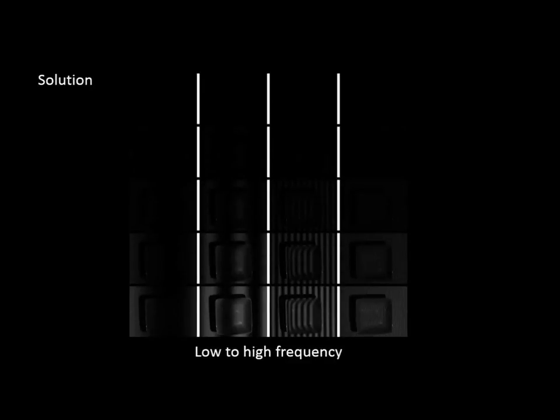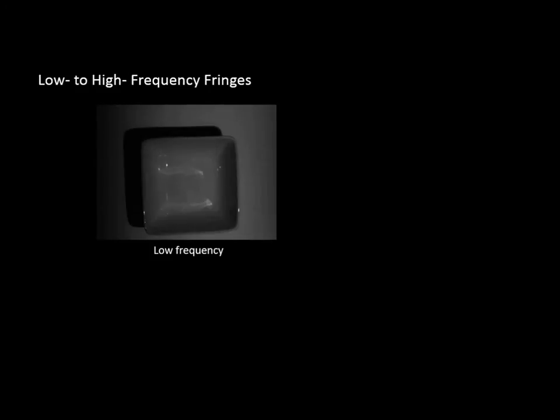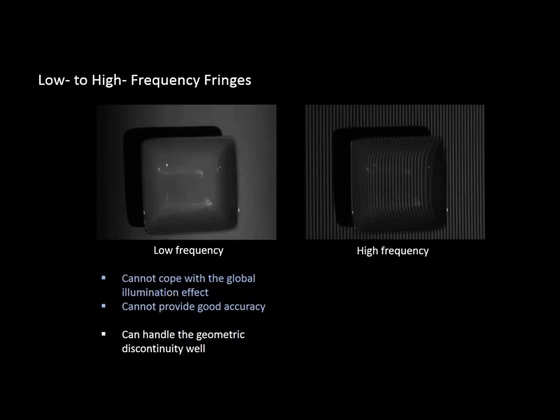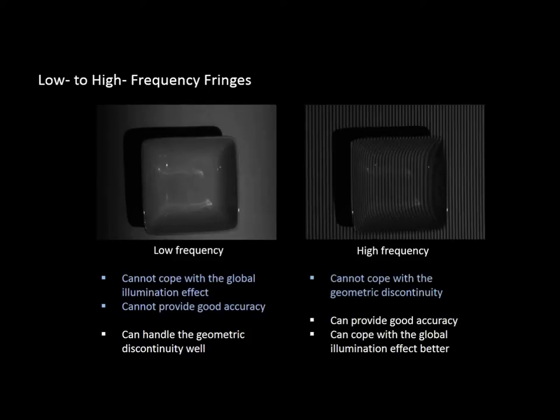We can use multiple frequencies and multiple illuminations to solve the problem. The low-frequency fringes cannot cope with the global illumination effect, but can handle the geometric discontinuity problem. In contrast, the high-frequency fringes can cope with the global illumination effect much better and can also provide high measurement accuracy.